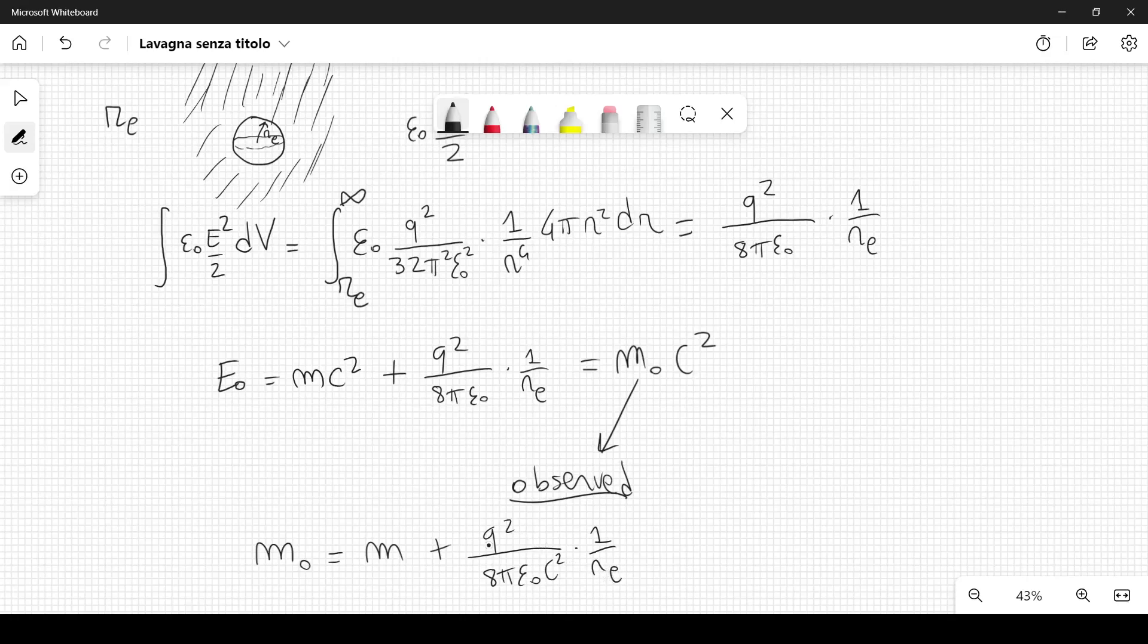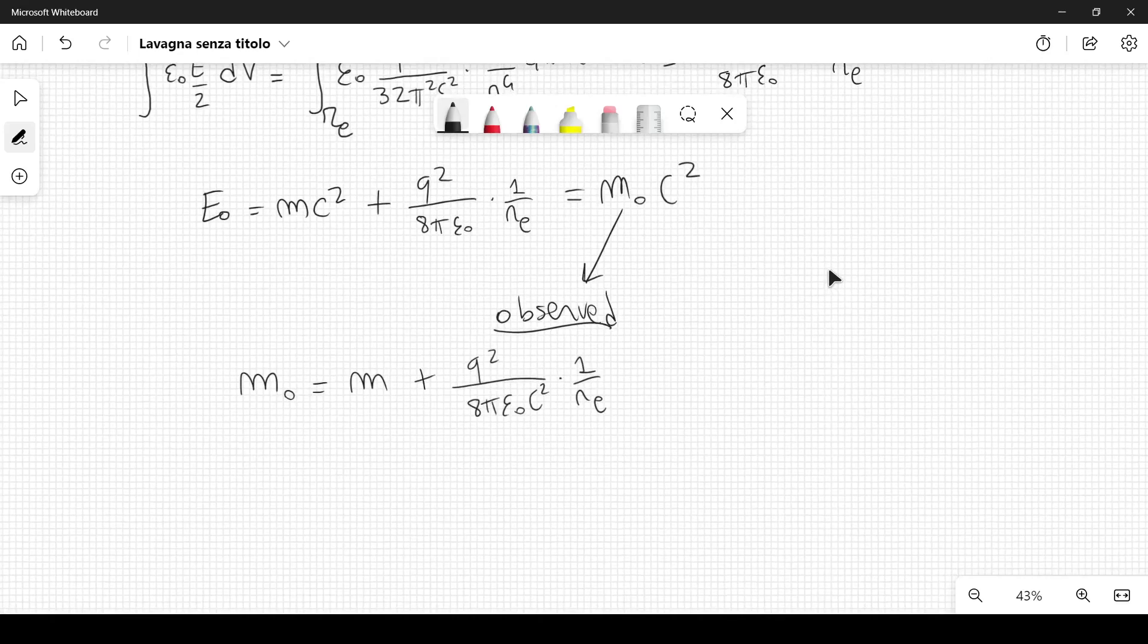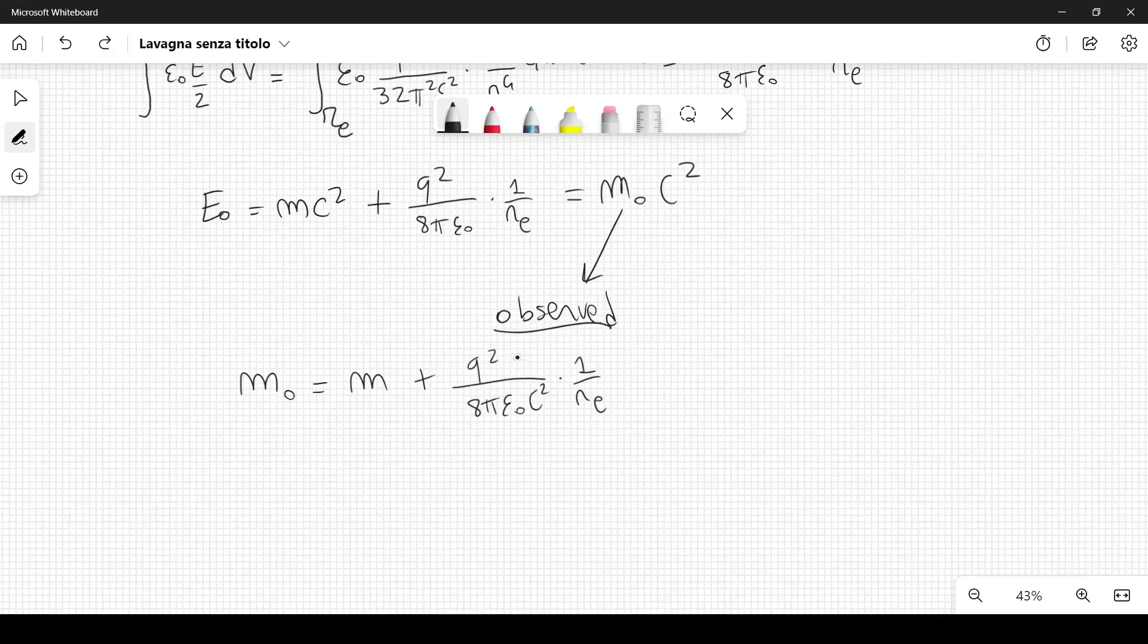And here we see that when r e goes to 0, we have a problem because one term diverges. This is as if the mass of the non-electromagnetic origin could be renormalized to give a finite result. Basically we can think of it as being divergent and it goes to minus infinity. So plus infinity, minus infinity, we get a finite result.